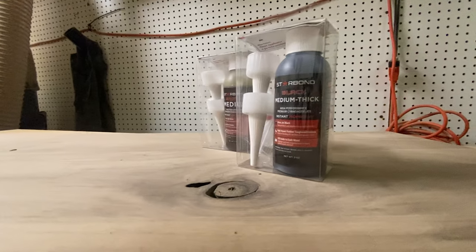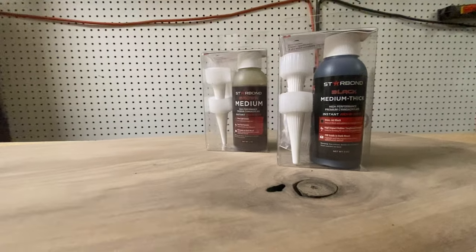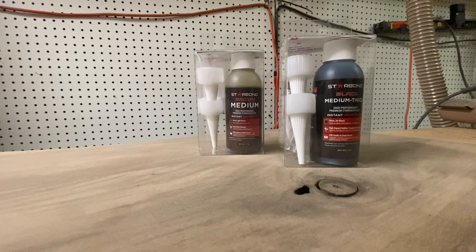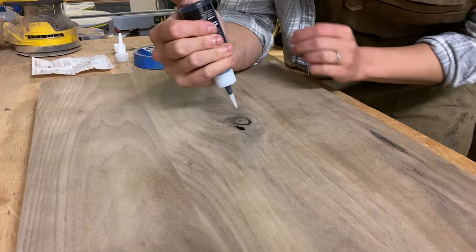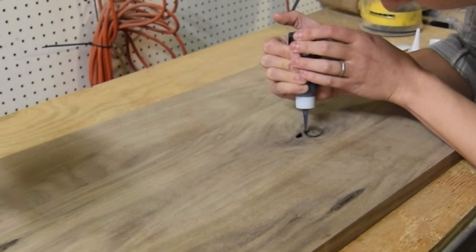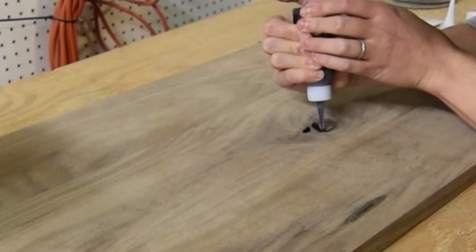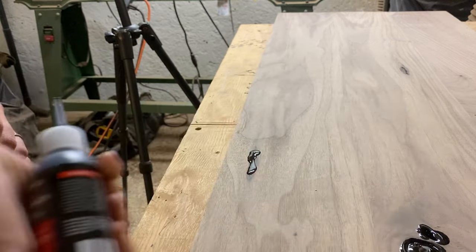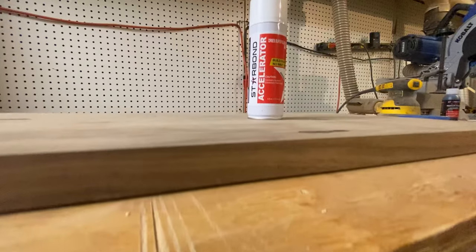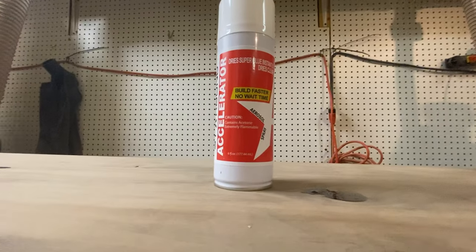With the bench top in rough shape, I set about using Starbond Super Glue to fill a few knot-caused gaps. Starbond sent me a few of their glues to test out and comment on. For the knots, I used their medium-thick black super glue. I filled each knot with the glue, then used the accelerator to get the quick, epoxy-like cure.